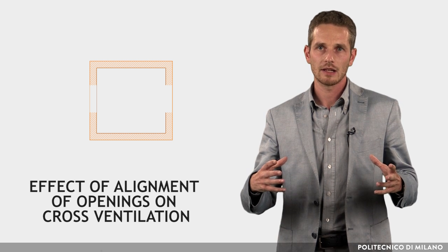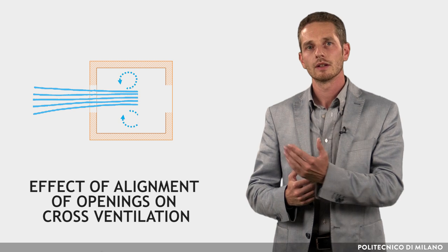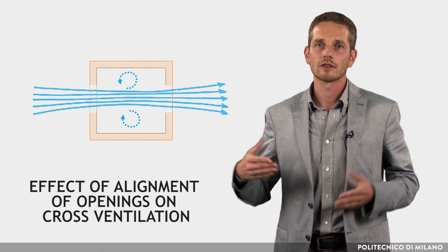When inlet and outlet openings are aligned, cross-ventilation is activated by wind. If the openings are aligned in the direction of the wind, the airflow passes right through the space, influencing a reduced part of it and giving rise to modest induced air movements.